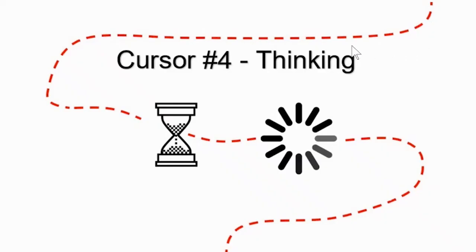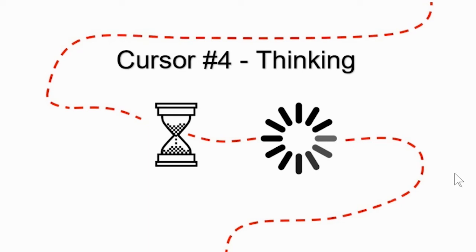Sometimes your computer needs an extra moment to think before performing the last command. In this case, the cursor will transform into some type of clock. Sometimes it's an hourglass, sometimes it's a spinning wheel. There are many styles, but they all indicate that you should wait until your computer has caught up with your last command.